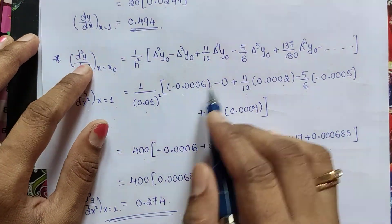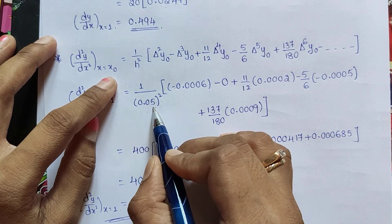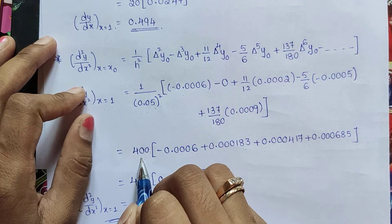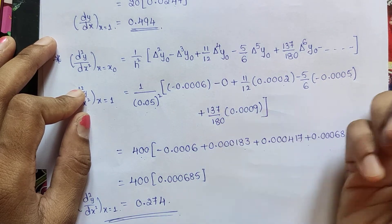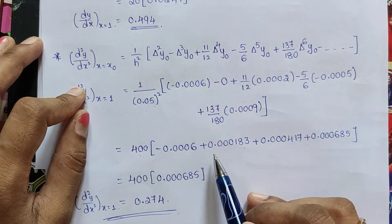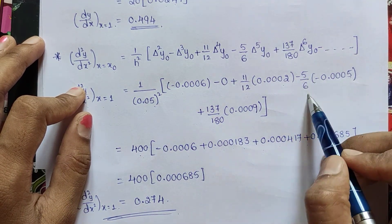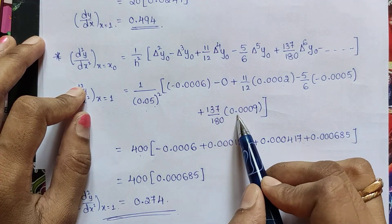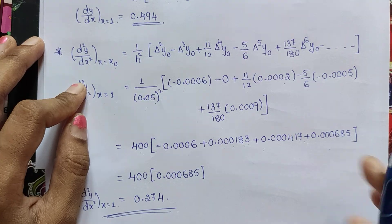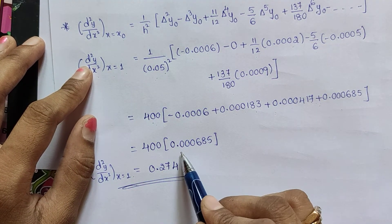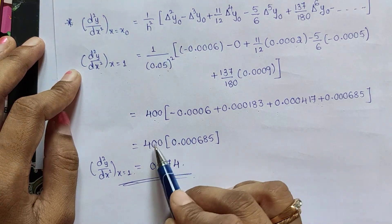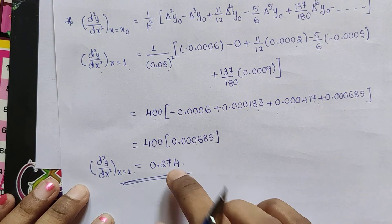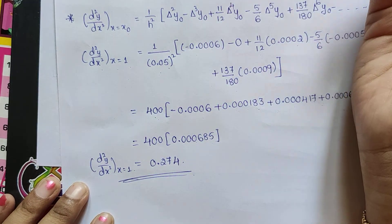Then multiply and calculate each value. 1/h² = 1/(0.05 × 0.05) = 1/0.0025 = 400. The 0 term is left out. Adding the bracket terms: plus 0.00183 plus 0.00417 plus (137/180 × 0.0009 = 0.00685). Adding and subtracting all values in the bracket gives 0.00685. Multiplying by 400 gives the value 0.274. This value is the second derivative. So we have calculated the first derivative and second derivative of the given table. Thank you.